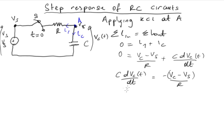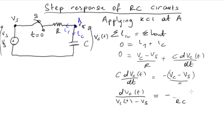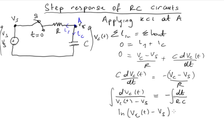Keeping dvc/dt and bringing the other vc to the other side, we have dvc over (vc(t) minus VS) equals negative dt over RC. Integrating both sides of the equation, we get ln(vc(t) minus VS) equals negative t over RC.